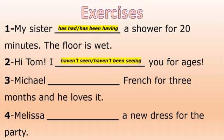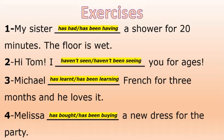Number two: 'Hi Tom, I ___ you for ages.' Options: 'I haven't seen you for ages' or 'I haven't been seeing you for ages.' Number three: 'Michael has learned French for three months and he loves it' or 'Michael has been learning French for three months and he loves it.' Number four: 'Melissa has bought a new dress for the party' or 'Melissa has been buying a new dress for the party.' Take some time to decide the correct tense.